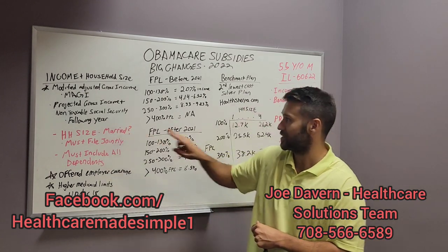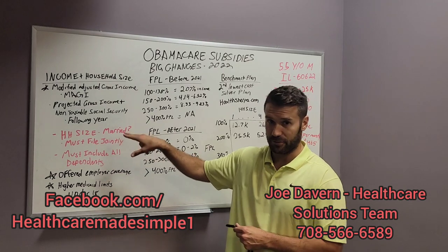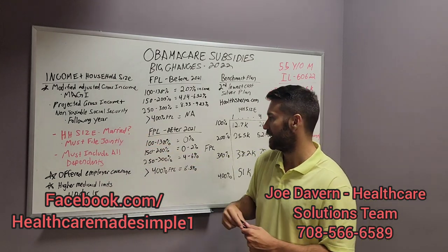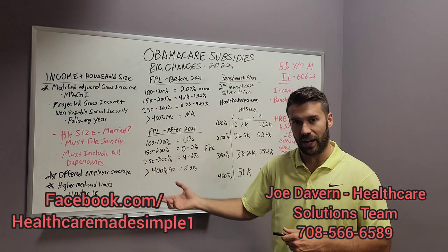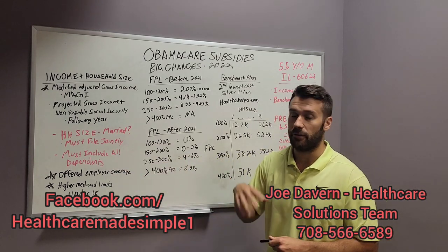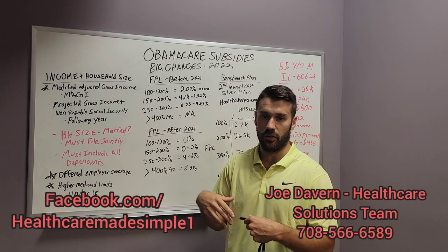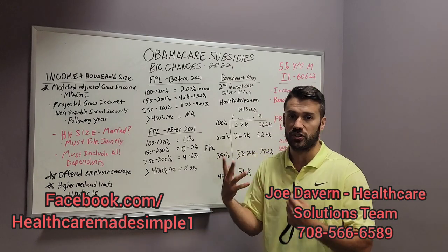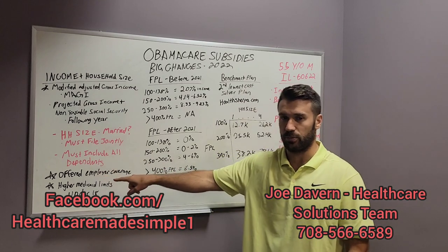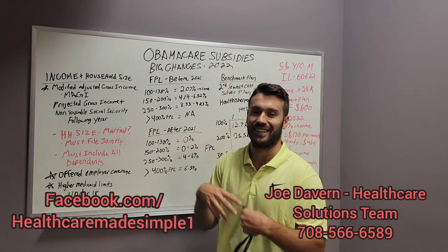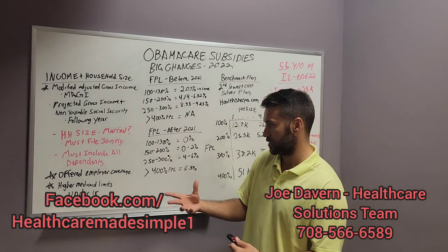The other thing that matters is household size. If you're married, you have to file jointly to qualify for subsidy. And anybody you claim as a dependent will affect how much money you're going to get from the government for subsidy. There are some other rules, like if you're offered employer coverage, oftentimes that eliminates the whole household from being able to qualify for subsidy.